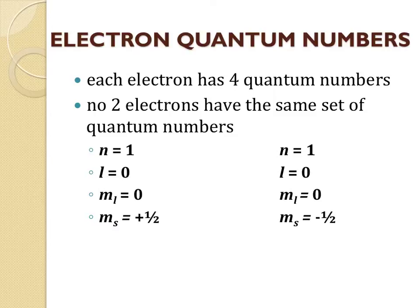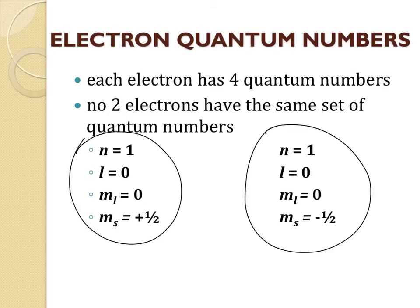Each electron has a set of four quantum numbers that are unique to that electron — no two electrons have the same set of four quantum numbers. For example, two electrons here might have three out of four quantum numbers that are the same, but the fourth one is different, and that's what makes it unique to the electron.